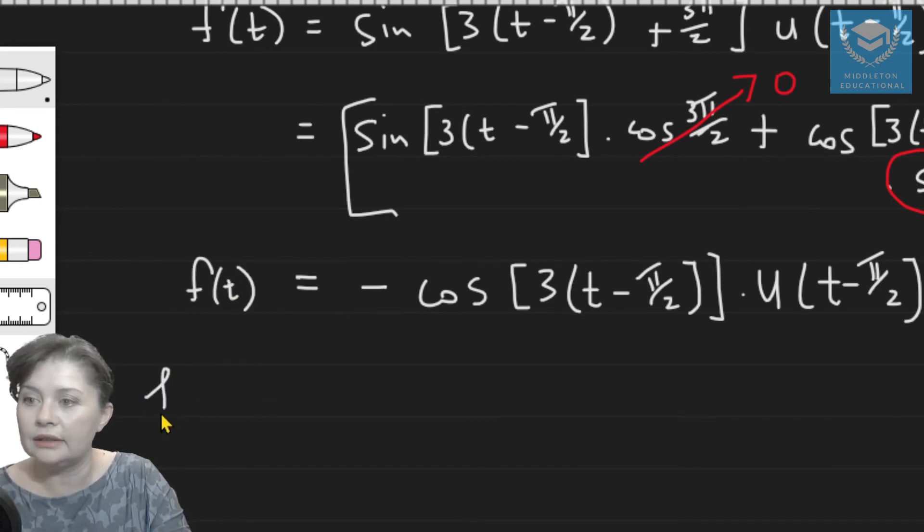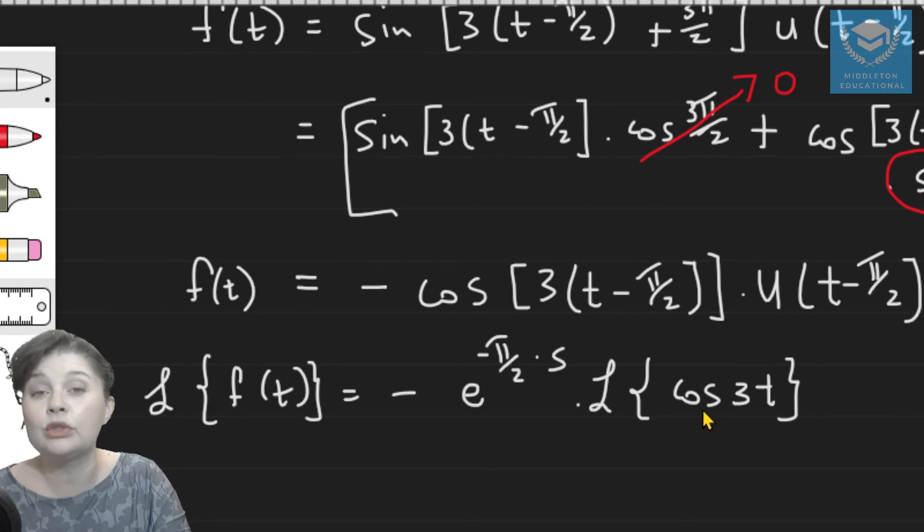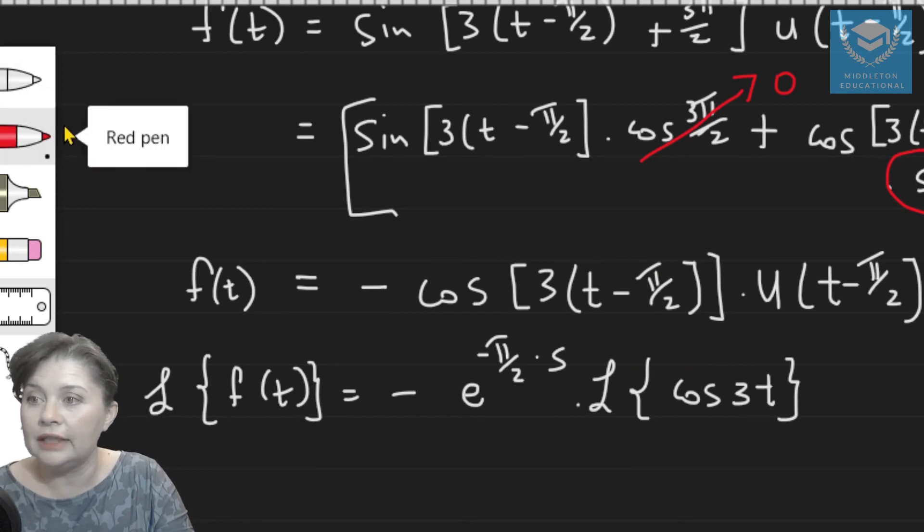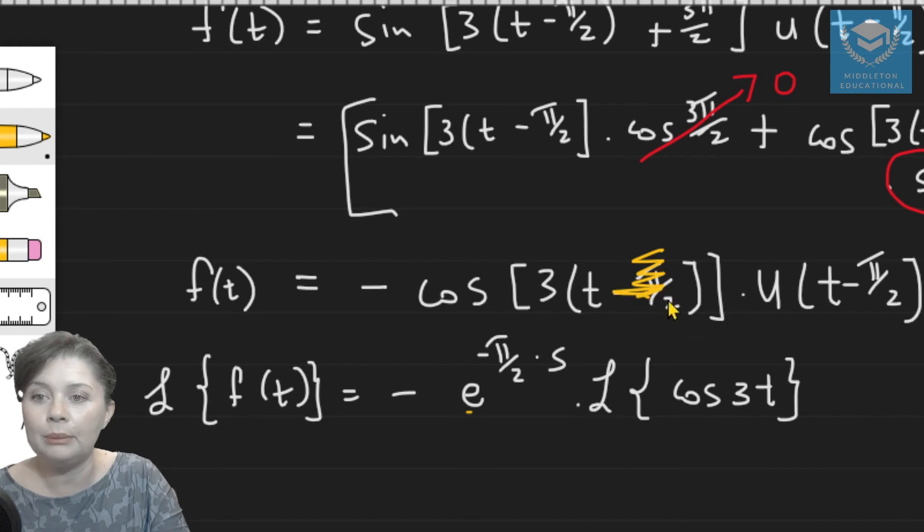So if I now find the Laplace transform of f(t), that is going to equal minus e to the power of minus pi over 2 times s, times the transform of cos of 3t. Because the function that is acting on t is cos 3 argument. Another way to look at it is, if I apply the Laplace transform, the pi over 2 is the shift. So once I've dealt with the pi over 2 in this exponent, I can kind of cover it up and see what's left. So what is left is cos of 3t.